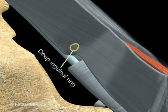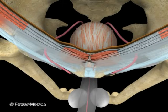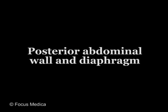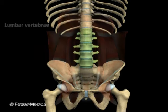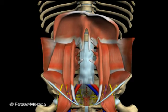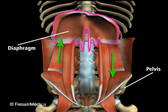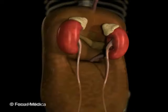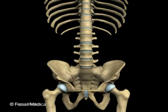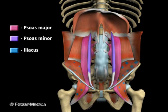The inguinal canal extends from the deep inguinal ring to the superficial inguinal ring and carries the spermatic cord in males. The posterior abdominal wall includes the lumbar vertebrae, attached muscles and fascia, vessels and nerves. It extends from the diaphragm above to the pelvis below, and consists of 5 main muscles: the psoas major and minor, the iliacus, the quadratus lumborum, and the diaphragm.